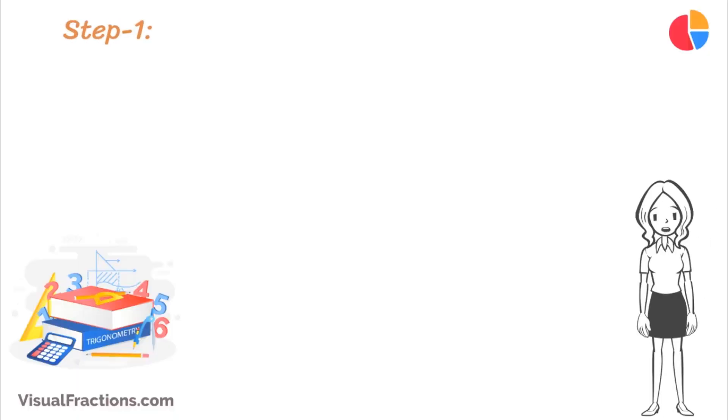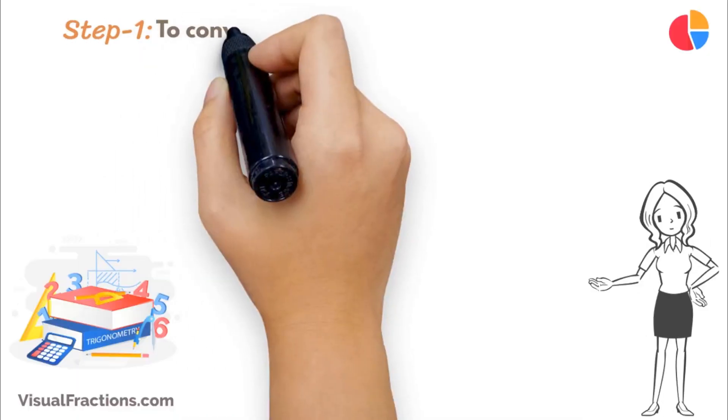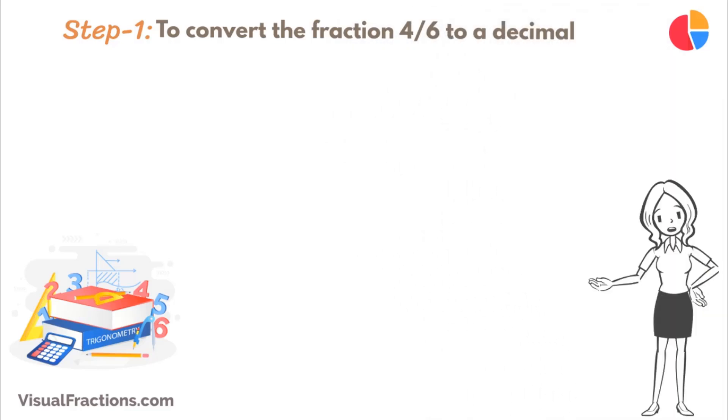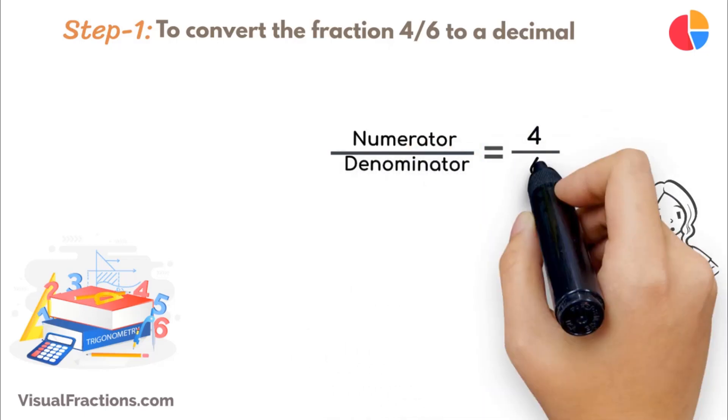The first step in converting the fraction 4 sixths to a percent is to convert this fraction to a decimal. We do this by dividing the numerator, the top number, which is 4, by the denominator, the bottom number, which is 6.